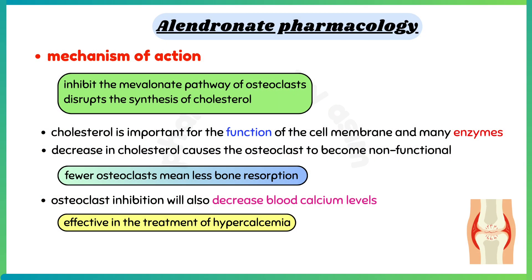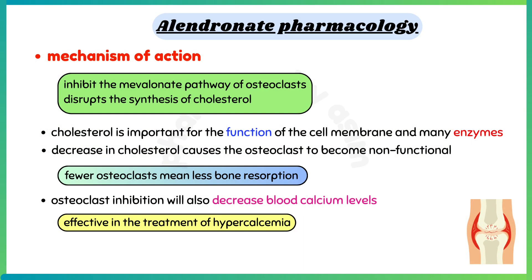Talking about mechanism of action: alendronate works by inhibiting the mevalonate pathway of osteoclasts, which disrupts the synthesis of cholesterol. Cholesterol is important for the function of the cell membrane and many enzymes. This decrease in cholesterol causes the osteoclast to become non-functional.